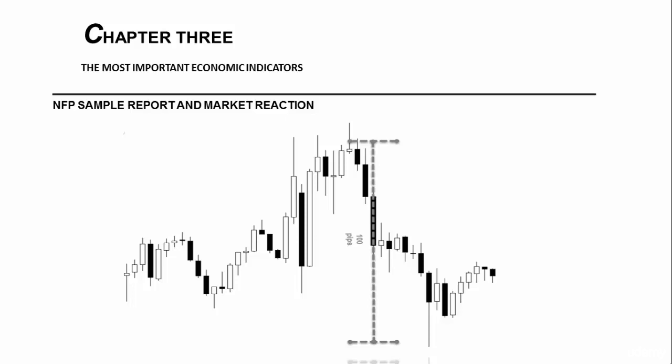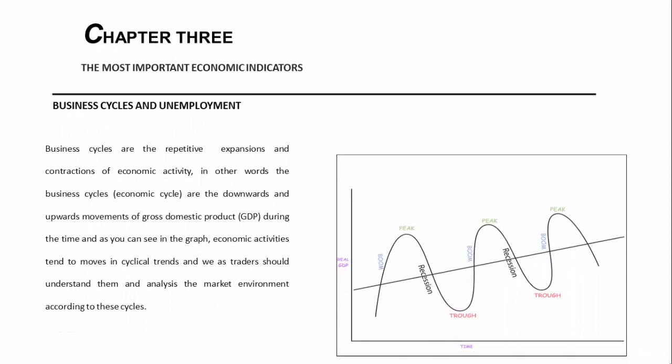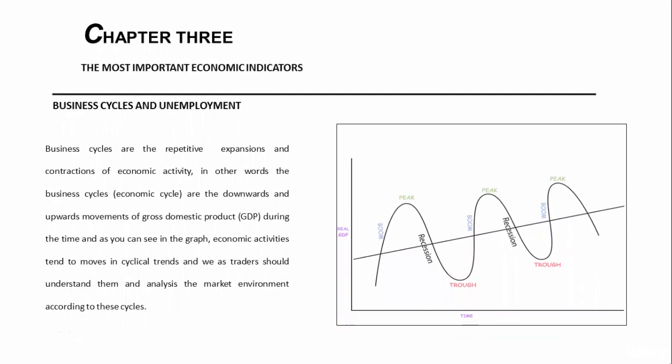Now let's look at latent layers and the relationship between employment and other factors. Business cycles are repetitive expansions and contractions of economic activity — in other words, the downward and upward movements of gross domestic product. As we can see in the graph, over time, economic activities tend to move in cyclical trends.